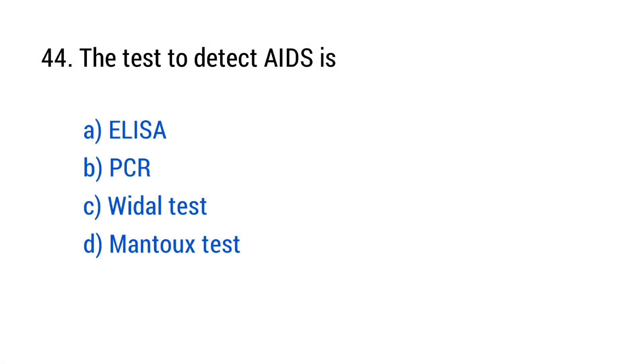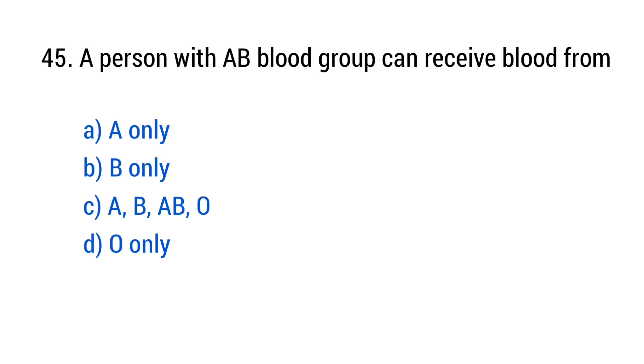Question number 44. The test to detect AIDS is? The right answer is option A, ELISA. Question number 45. A person with AB blood group can receive blood from? The right answer is option C, A, B, AB, O.